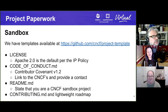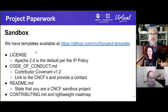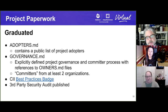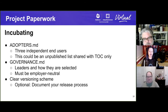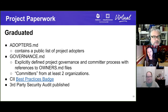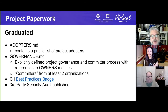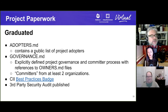The next step is the incubating stage. Your project will need at least three independent end users, showing there are people interested in using it. While a governance file is good to have in Sandbox, it is required at incubation — though at this stage it can still be fairly simple. At the graduating step, the governance MD file needs to be more detailed, with things like a committer process referencing OWNERS files, committers from at least two different employers, a CII Best Practices badge, and a third-party security audit.